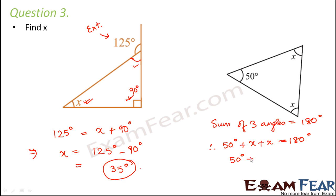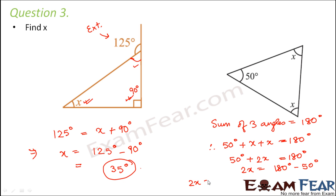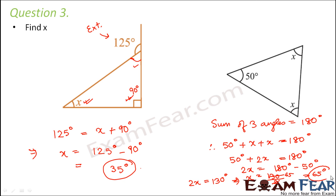So 50 degrees plus 2x is equal to 180 degrees, therefore 2x is equal to 180 minus 50, which is 130 degrees. So x is equal to 130 divided by 2, which is 65 degrees.